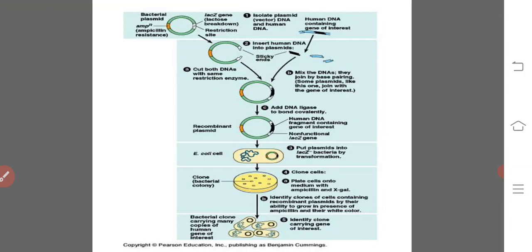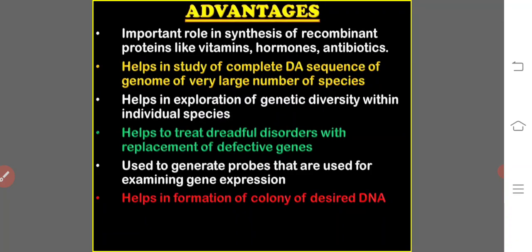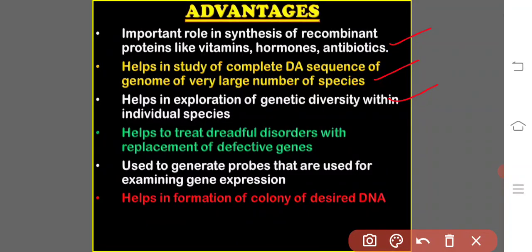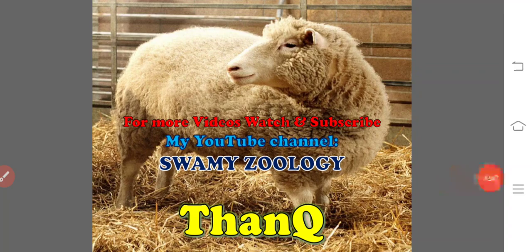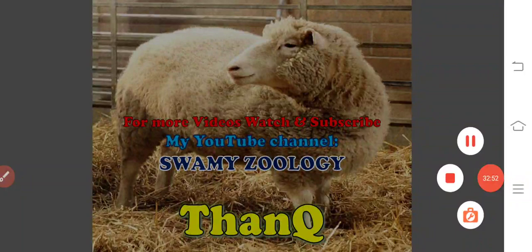Advantages of gene cloning: they play an important role in synthesis of recombinant proteins like vitamins, hormones, and antibiotics. This helps in studying the complete DNA sequence of genomes. Helps in exploration of genetic diversity within individual species. Helps to treat dreadful disorders by replacement of defective genes. Used to generate probes for examining gene expression, and helps in formation of a colony of desired DNA. These are the different methods of cloning: cell cloning, animal cloning, and gene cloning. Thank you.